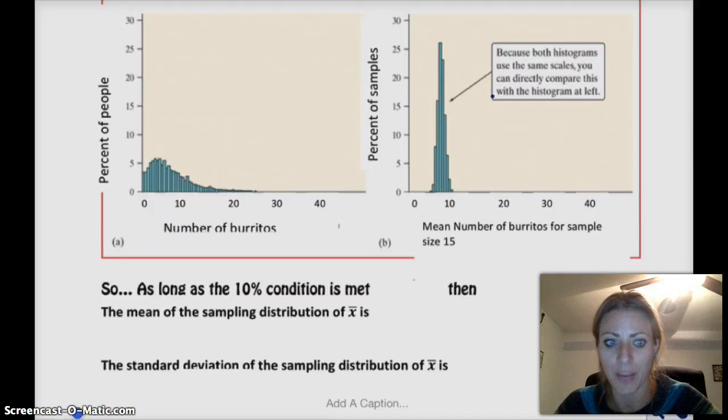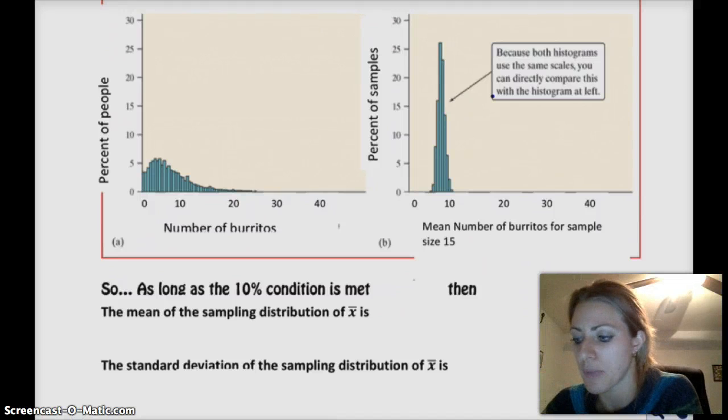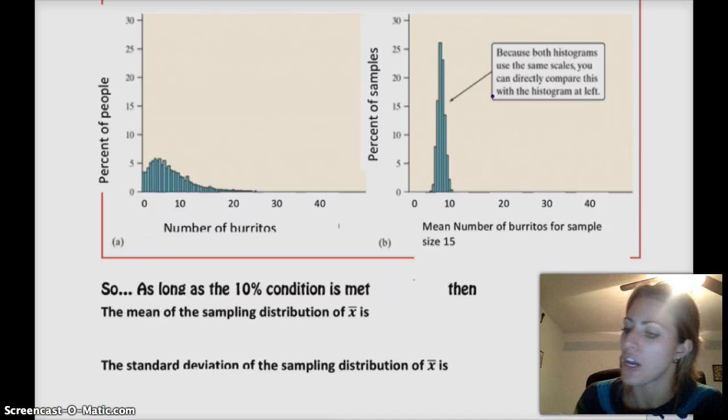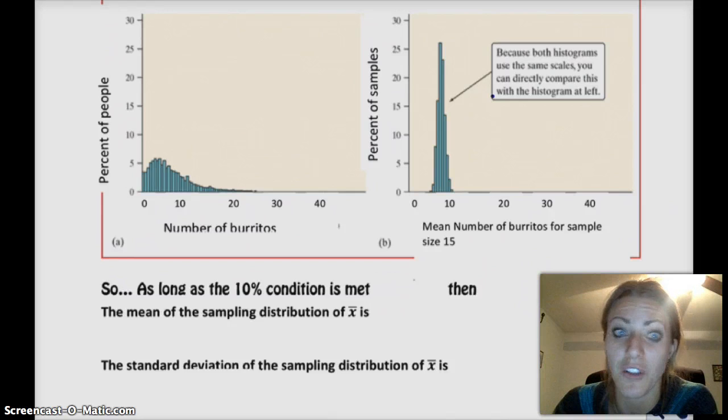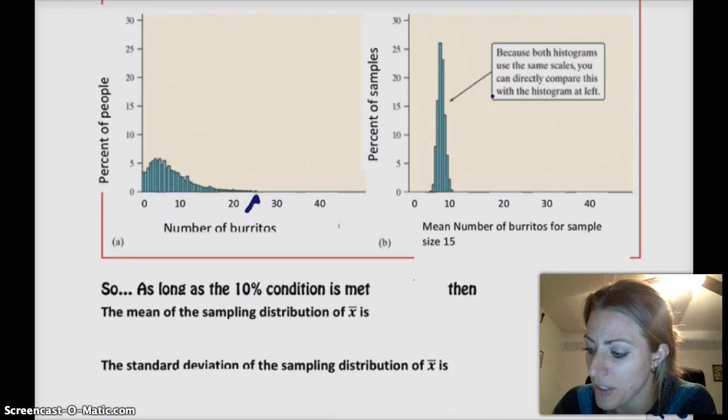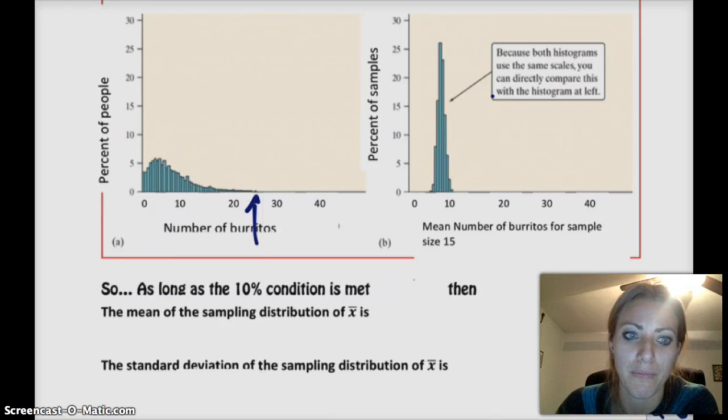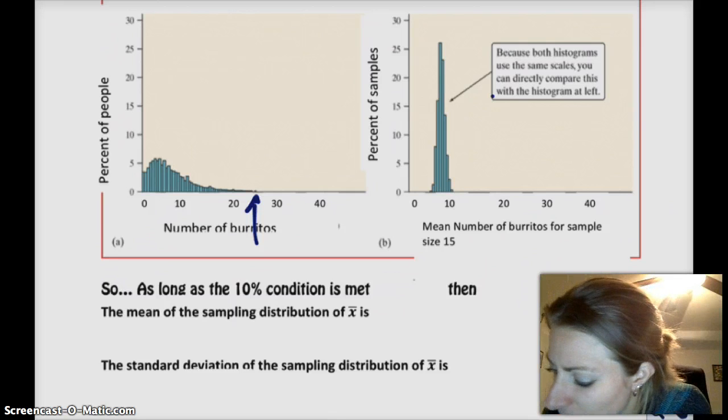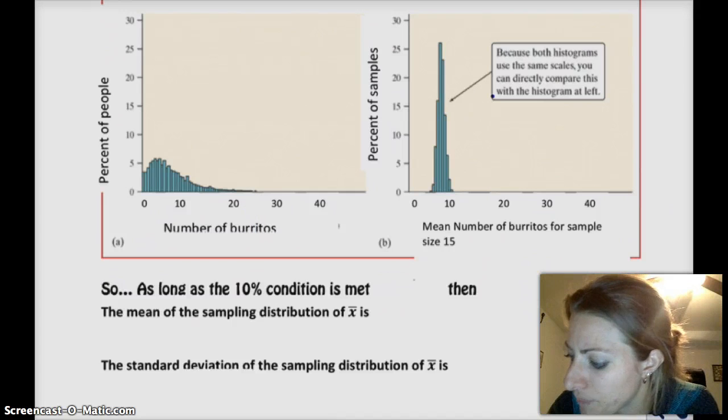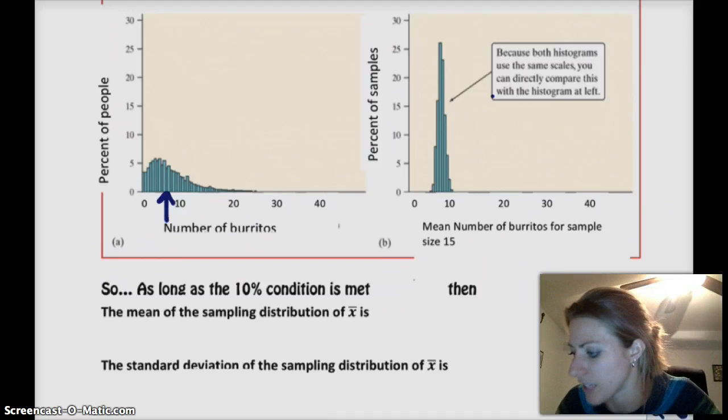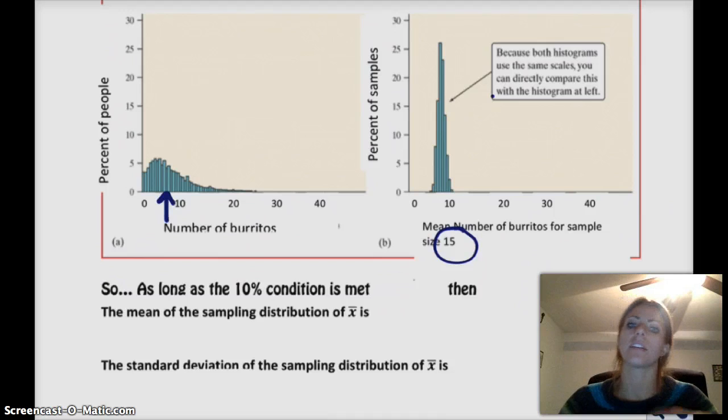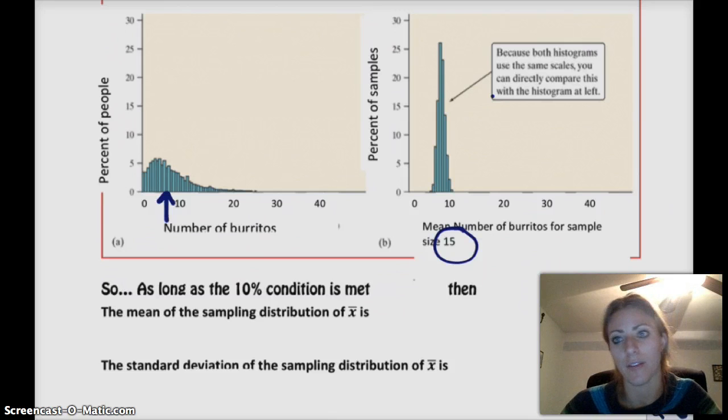Hopefully, in a random sample, we don't get any of the little peanuts, because that would be really mean to make them throw up from burritos. So, we take a simple random sample of 15 people, and then we find the mean of that sample. And then we could use that as an estimate. So we're going to actually look at some data. Say we actually did this scenario. And on the left, we have the percent of people who ate a certain number of burritos.